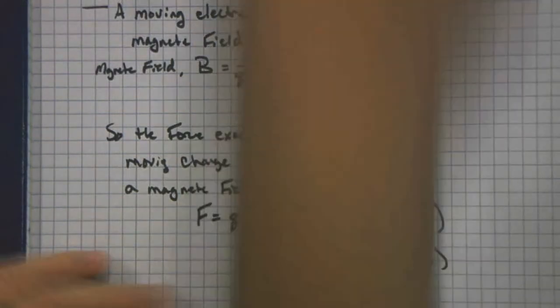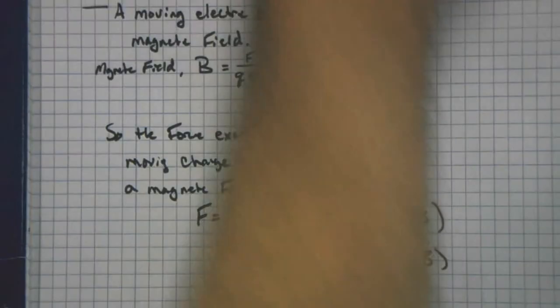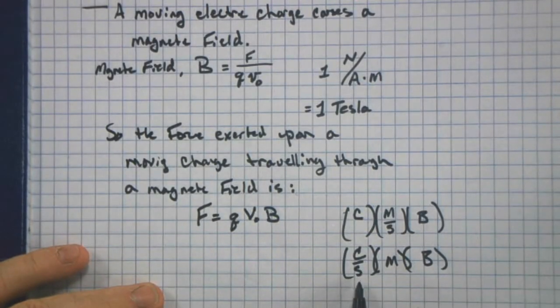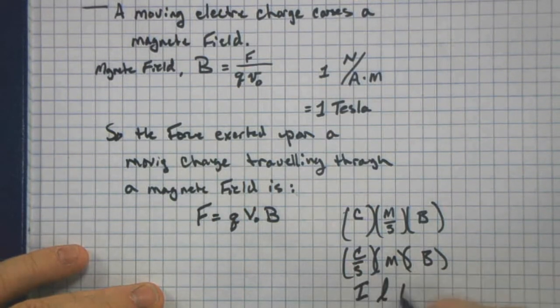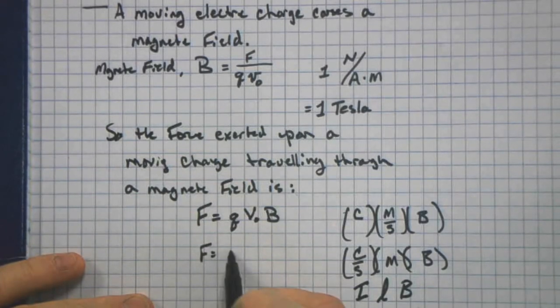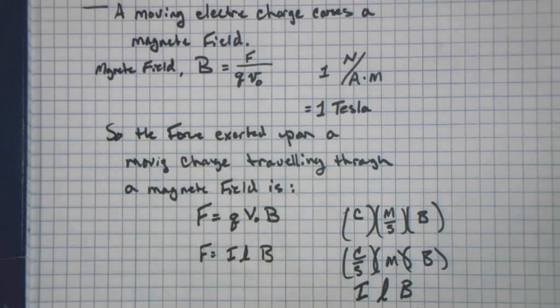Instead of being meters per second and a coulomb, this could actually be coulombs per second and a meter. And a coulomb per second is our current times our field here. This is a current and this would be the length of a wire. And that would be the force. Another way of writing this is that force equals the current times the length of a wire times the magnetic field on it.